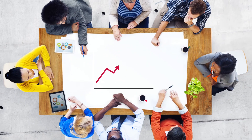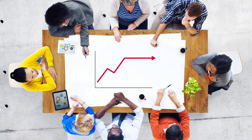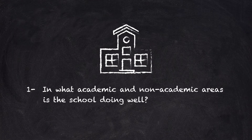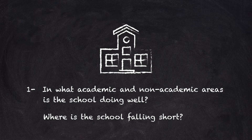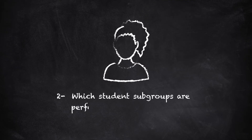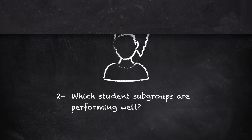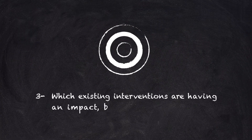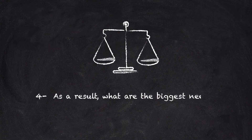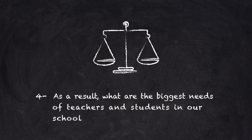There are a few questions to consider when reviewing past performance. In what academic and non-academic areas is the school doing well? Where is the school falling short? Include an analysis of formative and summative assessments, culture and climate data, attendance data, teacher evaluations, and family engagement. Which student subgroups are performing well, and which are not? Which existing interventions are having an impact based on data, and which are not? As a result, what are the biggest needs of teachers and students in our school right now?